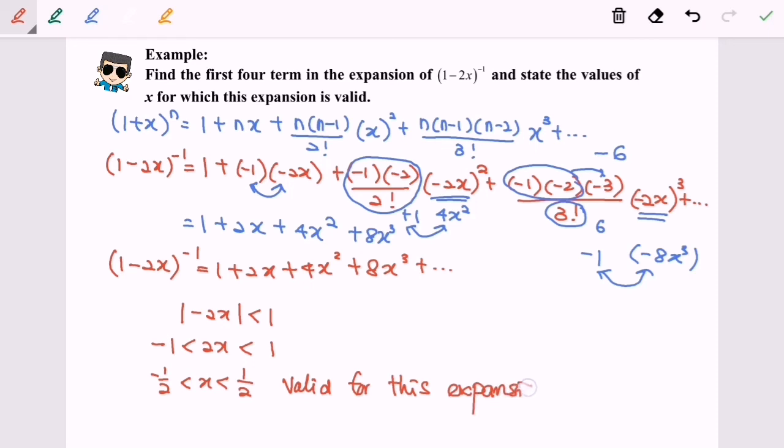So actually, what is the validity? The validity is from negative 1/2 to 1/2 where the values are not included. So meaning that when you are going to use this expansion, it is only valid when we substitute the value in between negative 1/2 and 1/2. So that's why we said valid for this expansion. Here we are and thanks for watching.